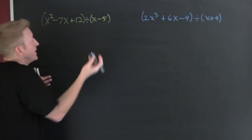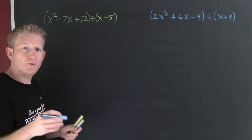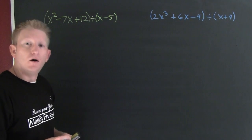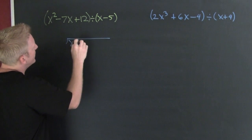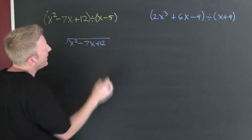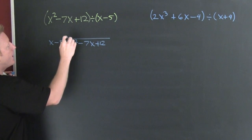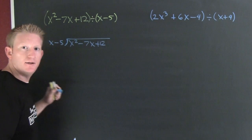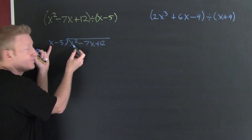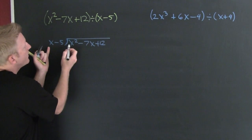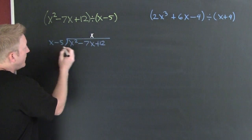Looking at this first example, it's a trinomial divided by a binomial. We're going old school: who's in the house — x squared minus 7x plus 12 — and out the house you have x minus 5. This is going to be very rhythmic, maybe even hypnotic. I want to ask myself: what do I multiply x by to get x squared? I need to multiply by x, and I'm going to put it in the x column.